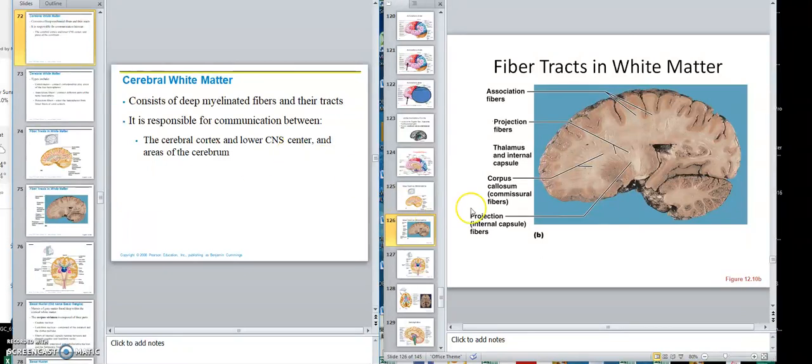Now you see here again were the cell bodies within the cortex. Coming down are myelinated axons coming from the cell bodies, the axons of those cell bodies. So it consists of deep myelinated fibers and tracts. Remember a tract is a cluster of fibers in the central nervous system, fibers being axons and dendrites.